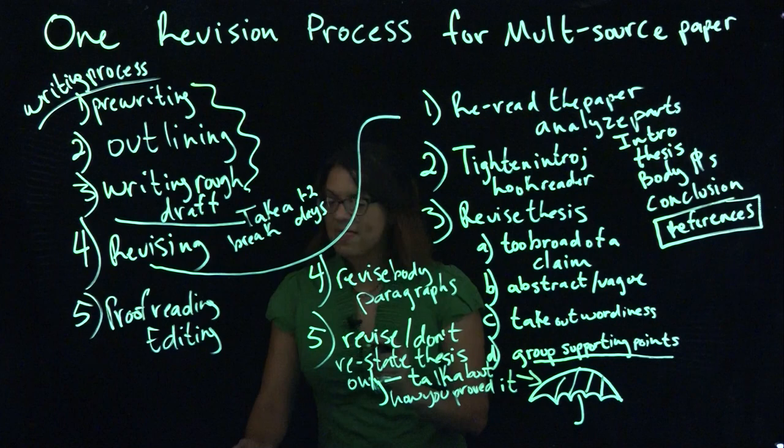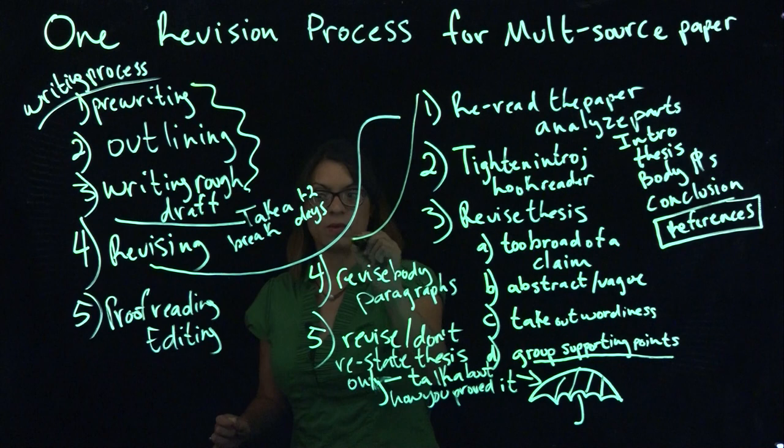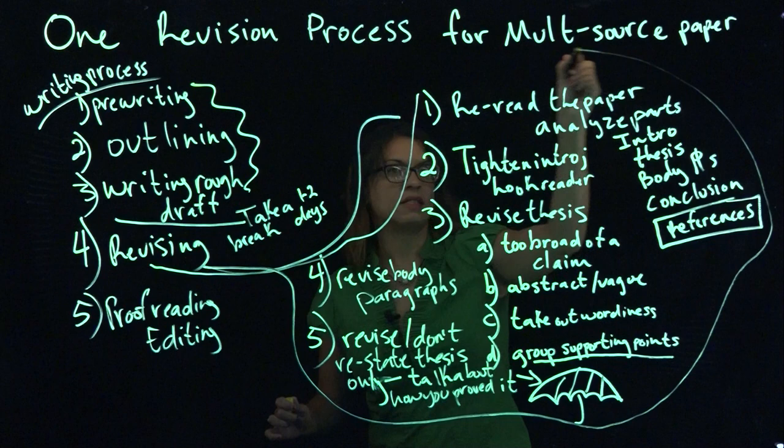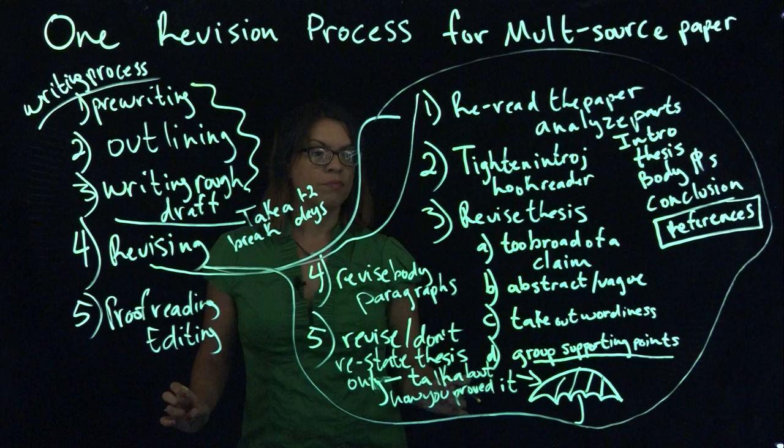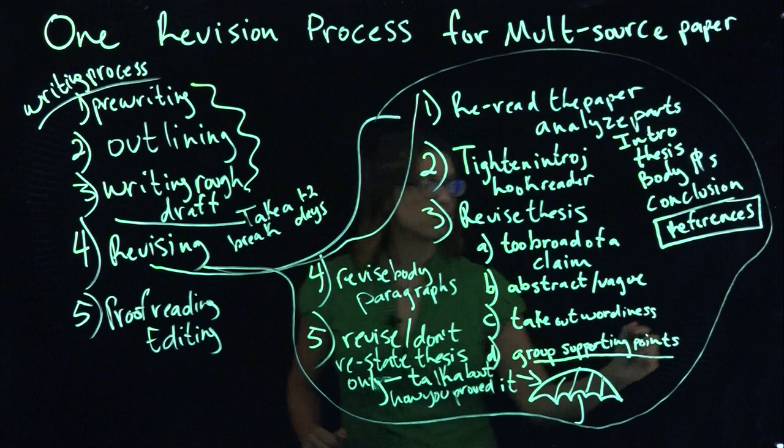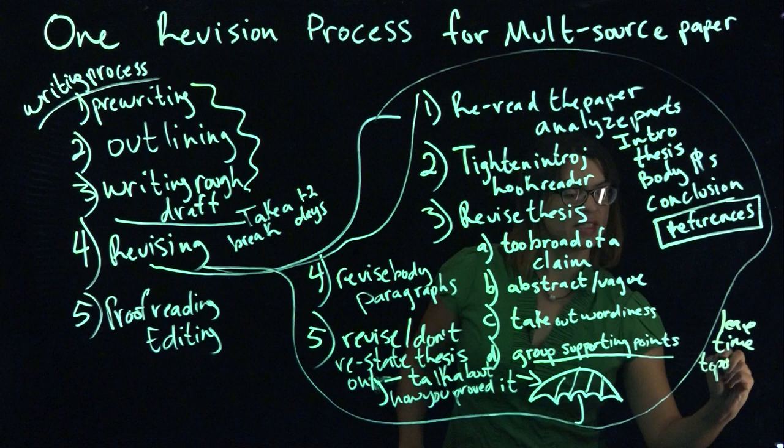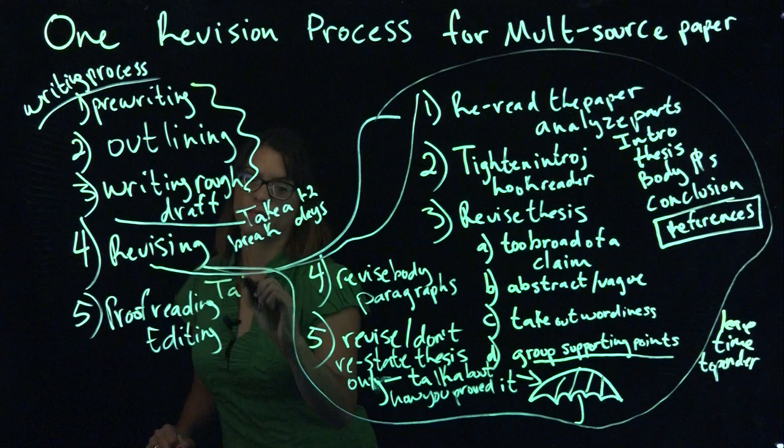And then take another break. This is a revision process. This is all step four. It's a big step. You want to set aside, it depends on how fast you type, how fast you think, how long you want to spend pondering. You definitely also want to leave some time to ponder. And that takes time. And once you've done this, take another break.